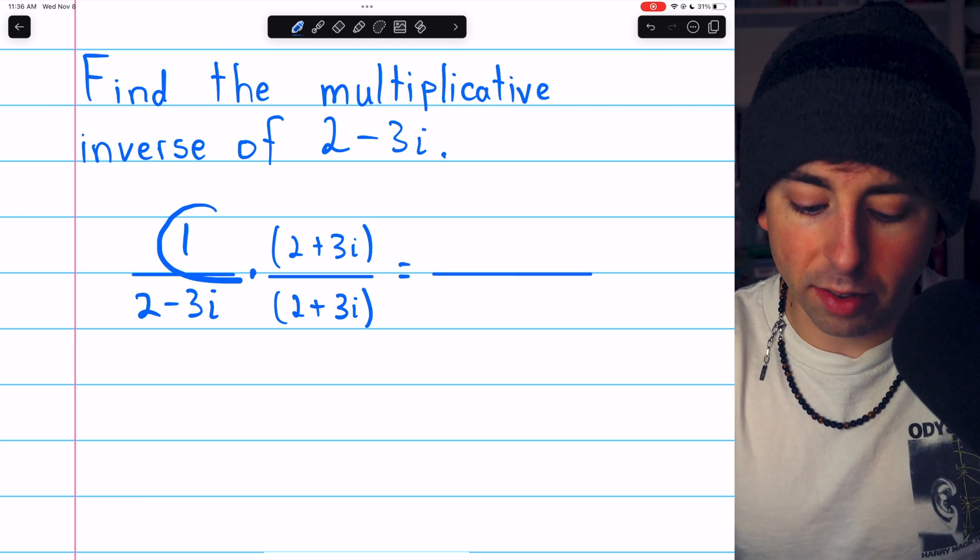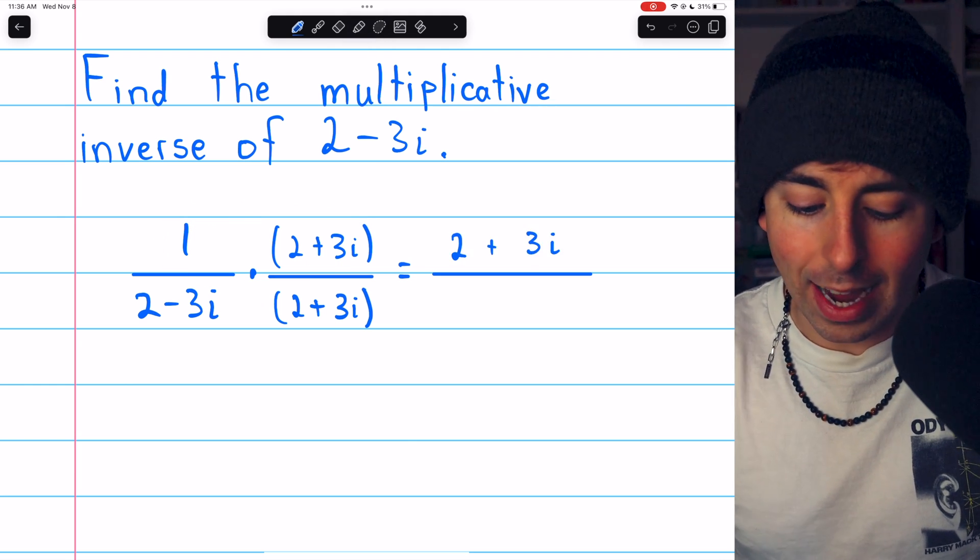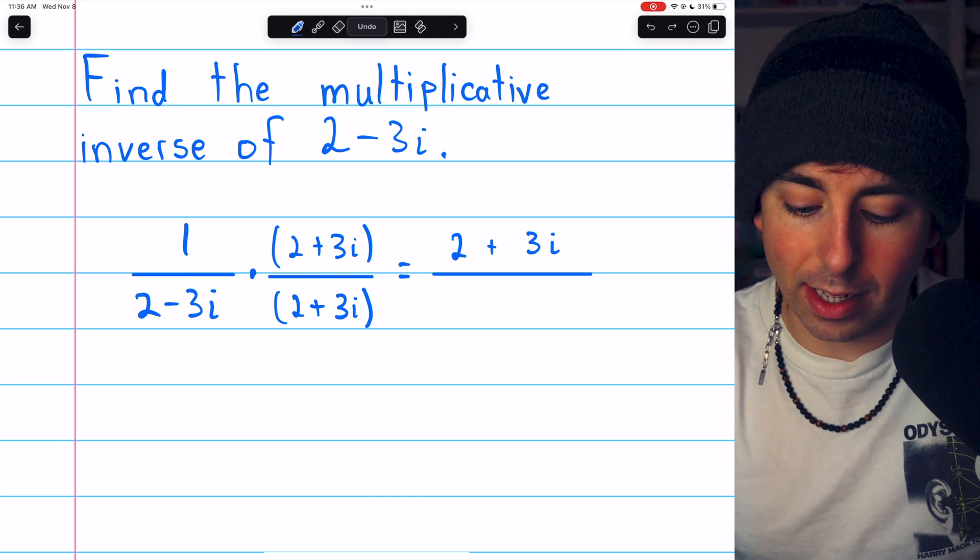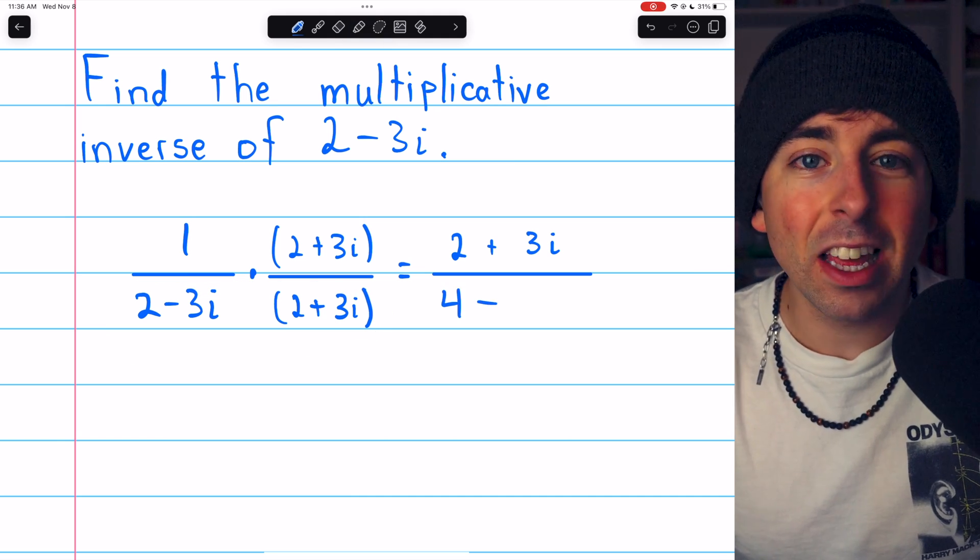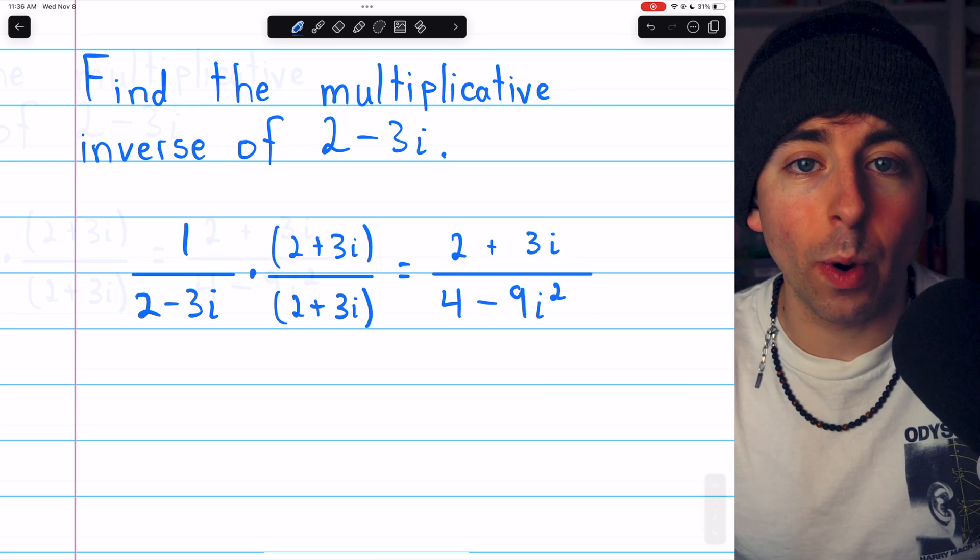In the numerator, we just have 1 times that conjugate. So that's just 2 plus 3i. And in the denominator, because of how conjugates work, we're going to have the difference of squares. 2 squared is 4 minus 3i squared, so 9i squared.